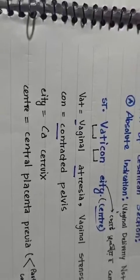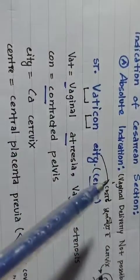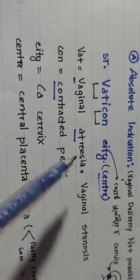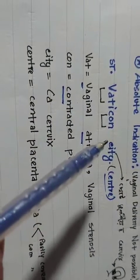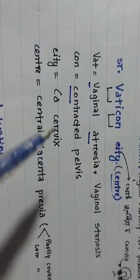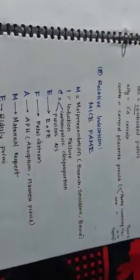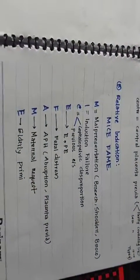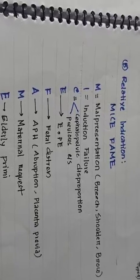And 'Center' in Vatican City stands for central placenta previa — that means type 3 and type 4 placenta previa. So the absolute indications are: vaginal atresia, contracted pelvis, carcinoma cervix, and central placenta previa.